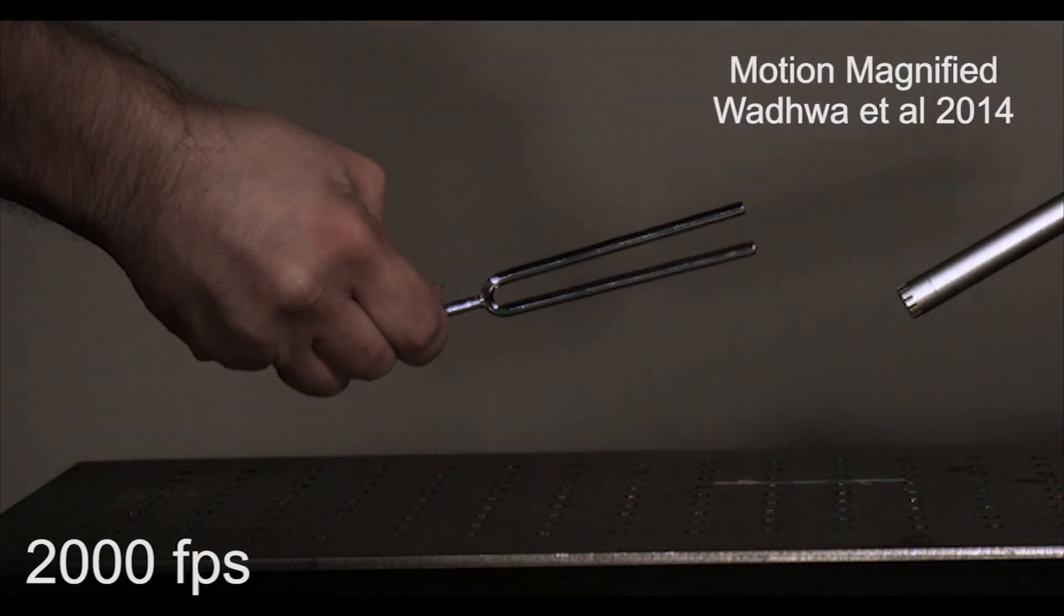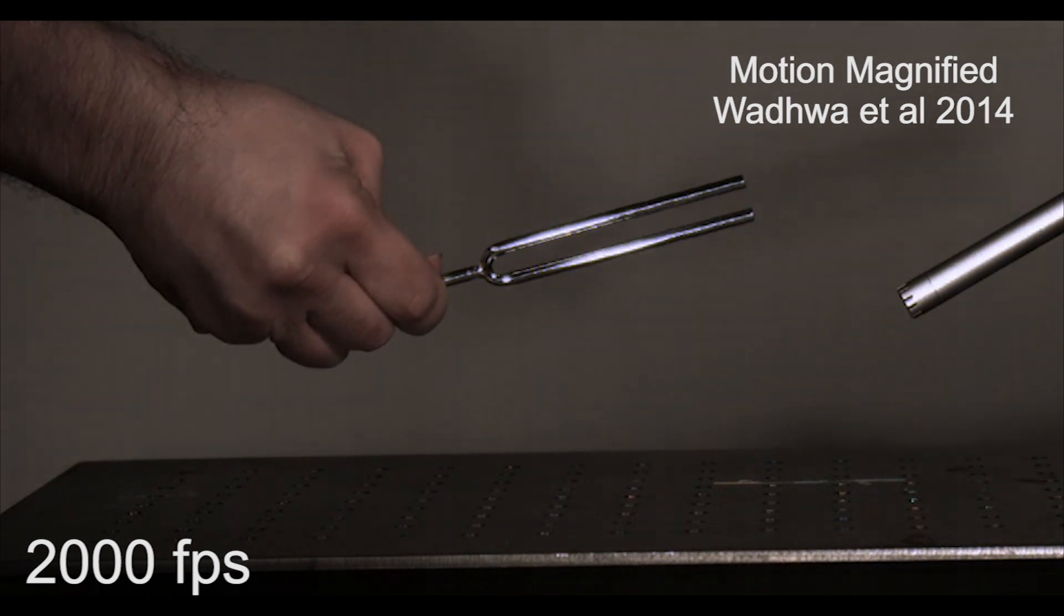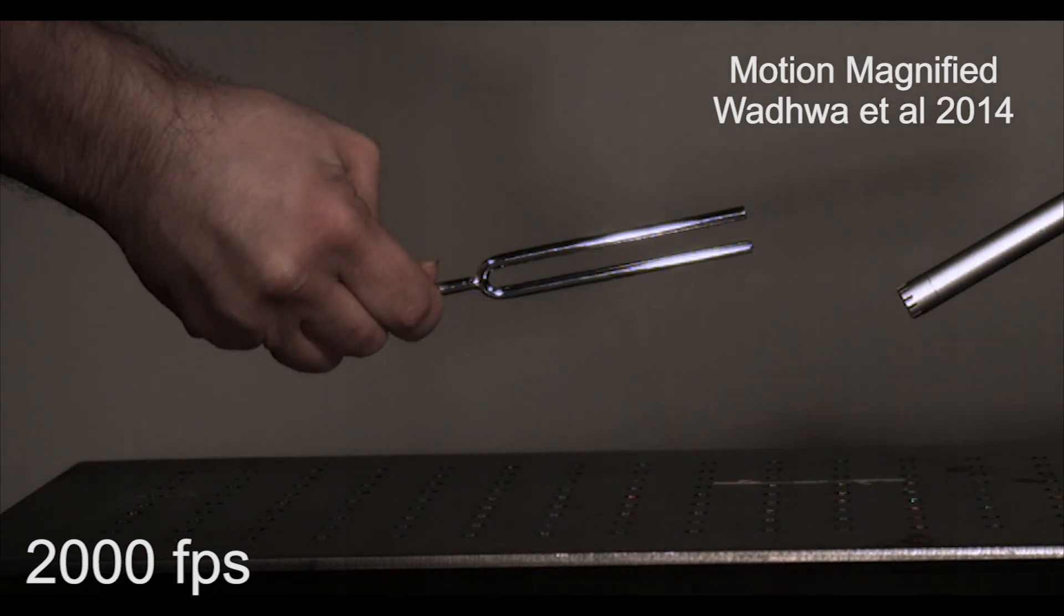However, recent work in computer vision has shown that these vibrations can often be recovered from video, even when motion is much smaller than a single pixel.